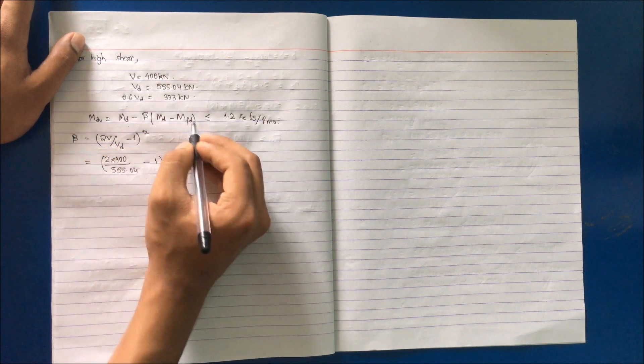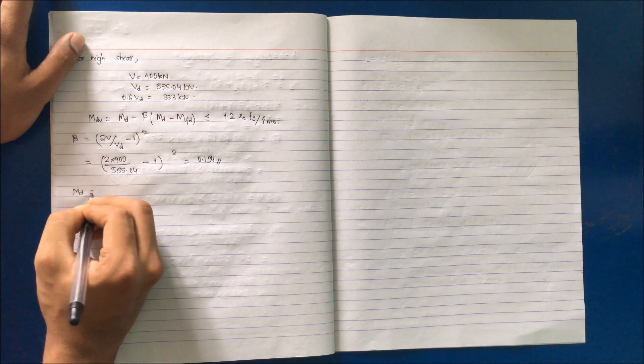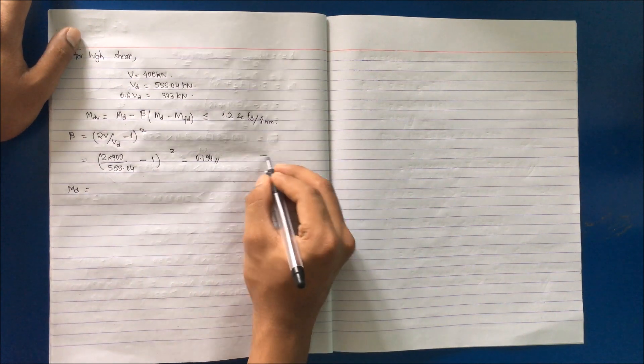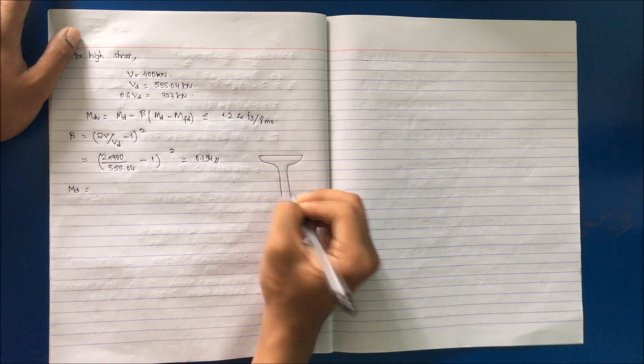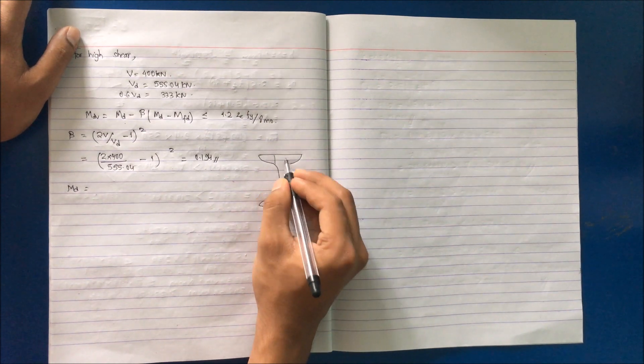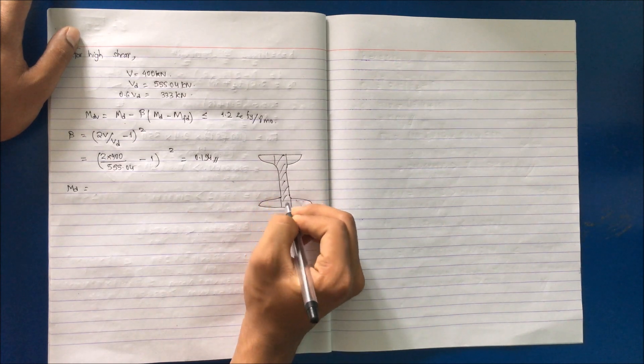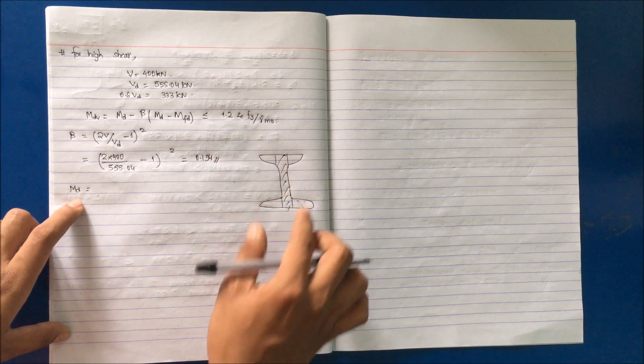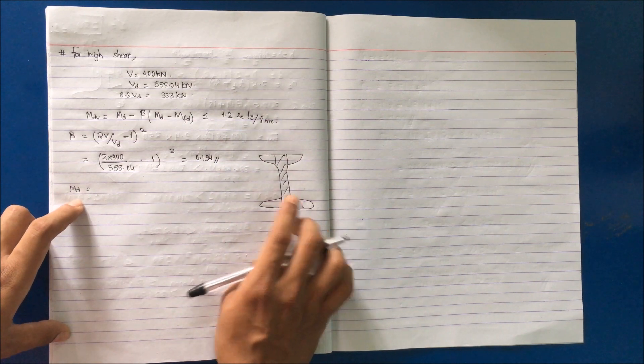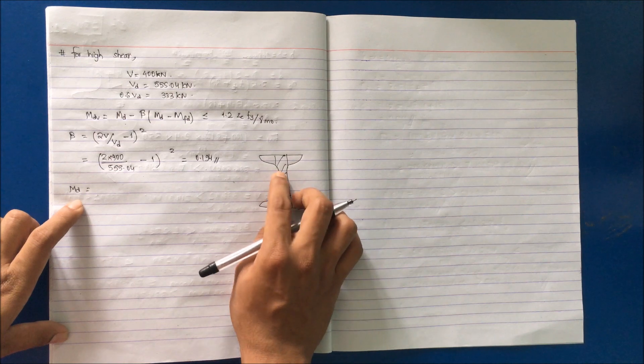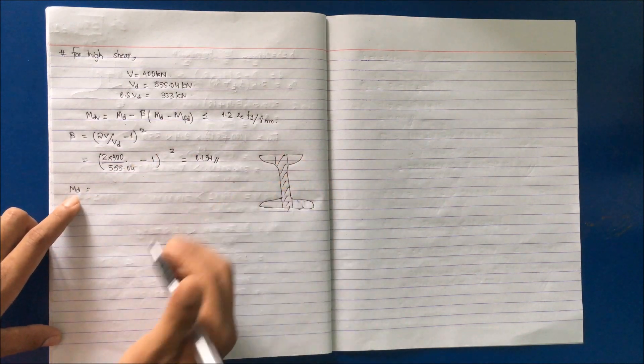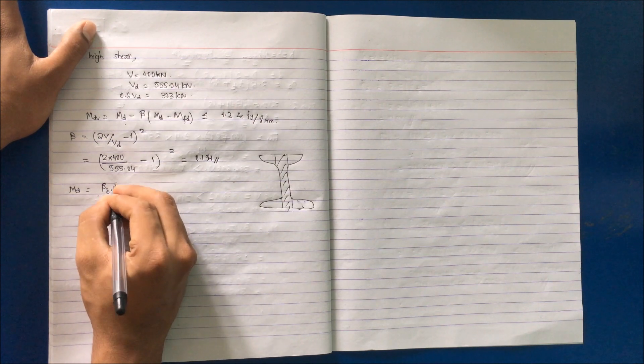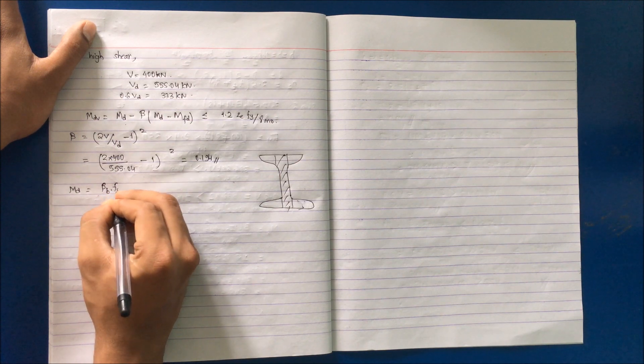The other thing we don't know is MD and MFD. MD is the plastic design moment of the whole section disregarding high shear force effect. If this is the I section, as we know, the shear area will be the web area. MD is the plastic design moment of the section disregarding the web area, that is high shear area.